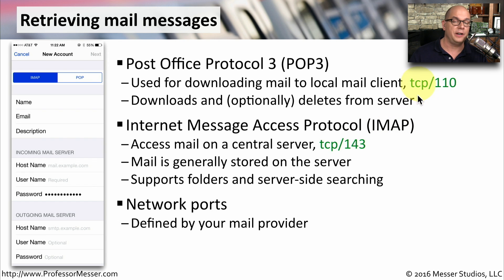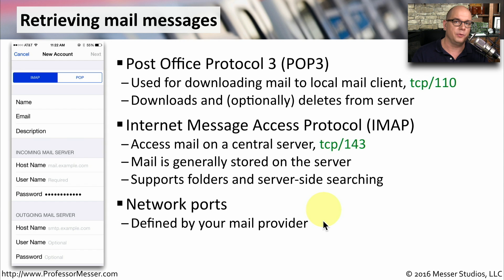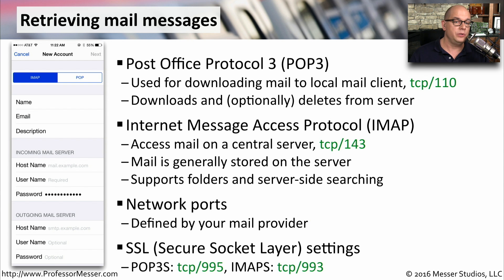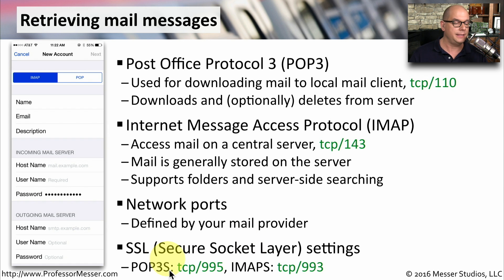The port numbers for POP3 and IMAP are standardized, but they don't have to be those particular numbers — you may want to check with your network or mail provider to see exactly what port numbers they're using. In most cases, we're not using the unencrypted version of POP3 or IMAP. Instead, we use SSL to encrypt mail as it's sent across the network. For POP3S, which uses SSL, we commonly use TCP port 995. For IMAPS, the secure version of IMAP, we commonly use TCP port 993.